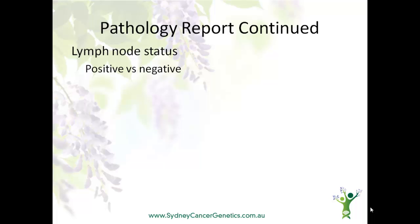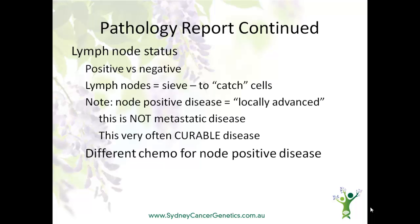Another important factor on the pathology report is the lymph node status. This is usually described as being positive or negative, and if more than one node was removed, how many of the nodes were involved. Lymph nodes act as sieves — they're there to catch any cells that may break away and help the immune system to destroy them. It's important to note that node positive disease — that is, cancer cells present in the lymph nodes — is not metastatic disease. Instead, it's often referred to as locally advanced and is very often curable. However, because the cells have demonstrated an ability to move, different chemotherapy regimens may be recommended for node positive disease. And sometimes, even if a mastectomy has been performed, radiotherapy will be recommended.